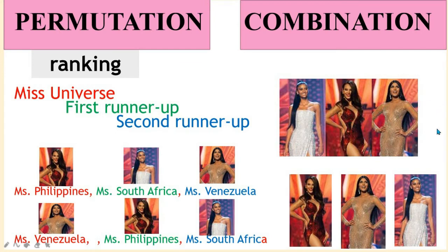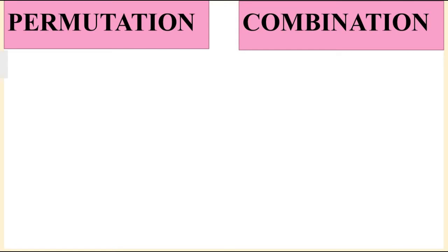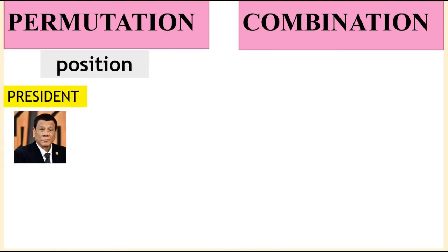It is considered as one count only, regardless of who comes first, second, or last. So if this is a random group, this is combination. When we talk about position, say for example the president is Mr. Duterte and the vice president is Mrs. Robredo —